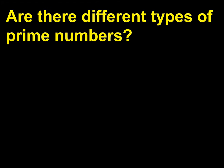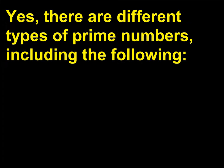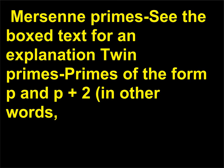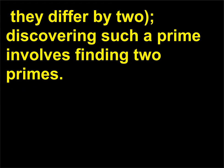Are there different types of prime numbers? Yes, there are different types of prime numbers, including Mersenne primes. Twin primes: primes of the form P and P+2, in other words, they differ by 2; discovering such a prime involves finding two primes.